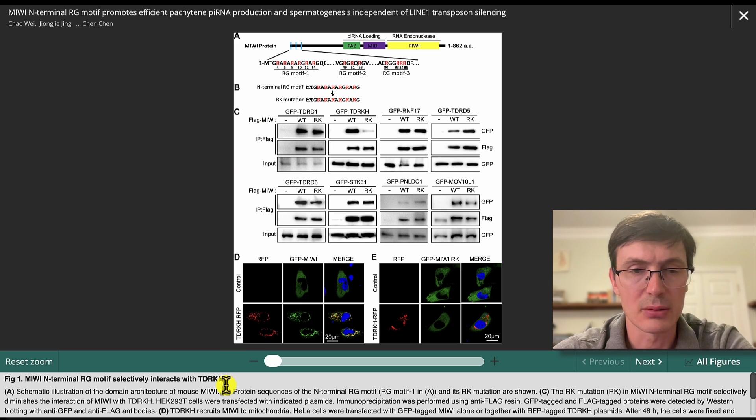For the panel B, I think they do also quite a good job. They say protein sequence of the N-terminal RG motif, RG motif 1 in A, and its RK mutations are shown. So here actually, that's what we see. This is the protein sequences of the N-terminal RG motif, and the RK mutation. And here you see the changes.